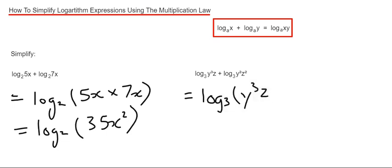If we simplify this answer, y cubed times y squared is y to the power of 5, and z times z squared is z cubed. So this is our final answer.